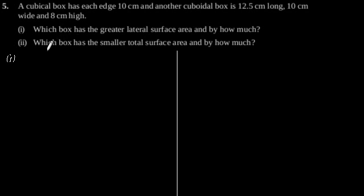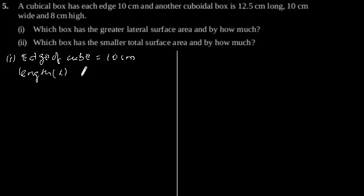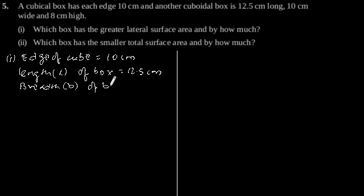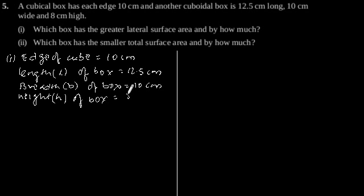So let's write what is given in the question. Given: edge of cube is equal to 10 cm. Length of cuboidal box is equal to 12.5 cm, breadth of cuboidal box is equal to 10 cm, and height of cuboidal box is equal to 8 cm.